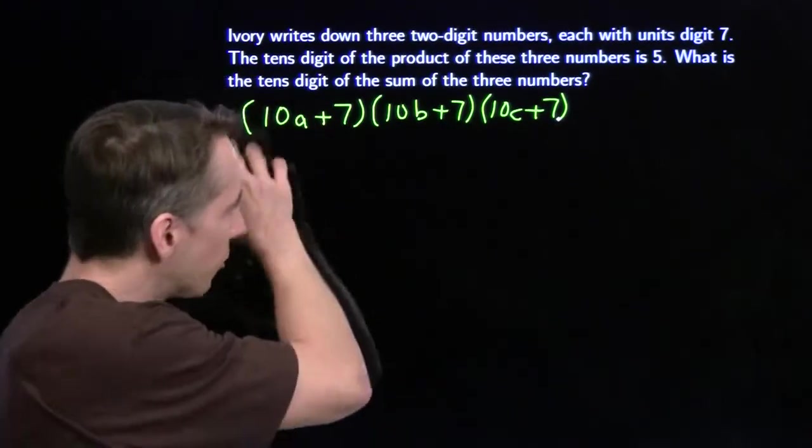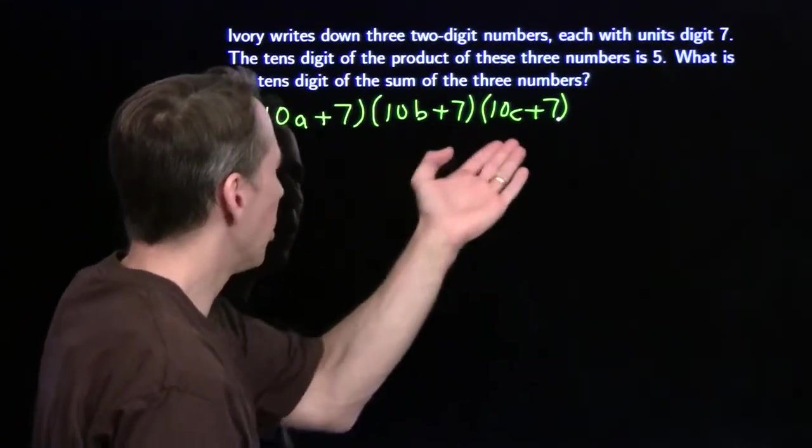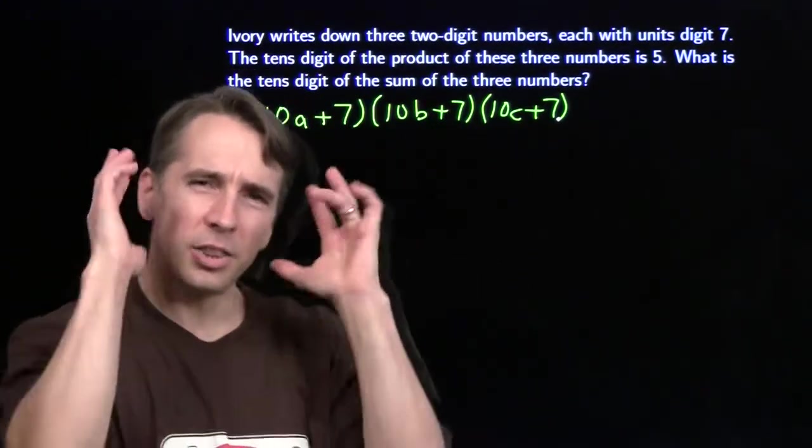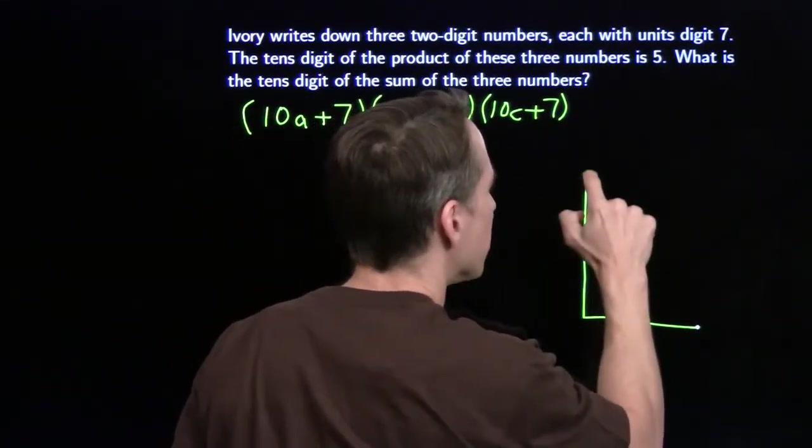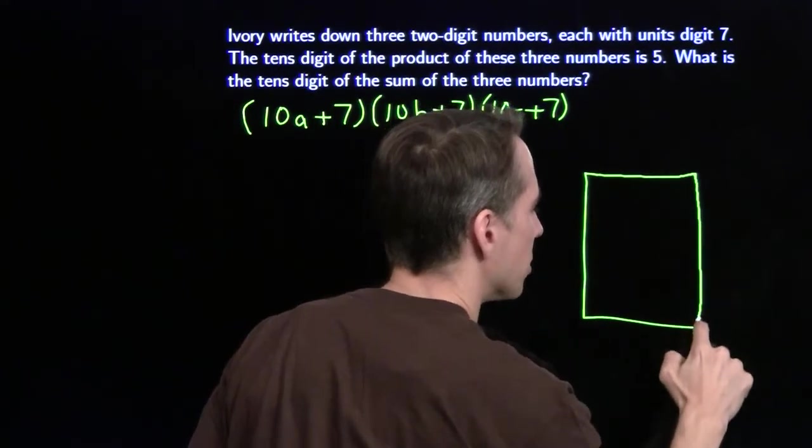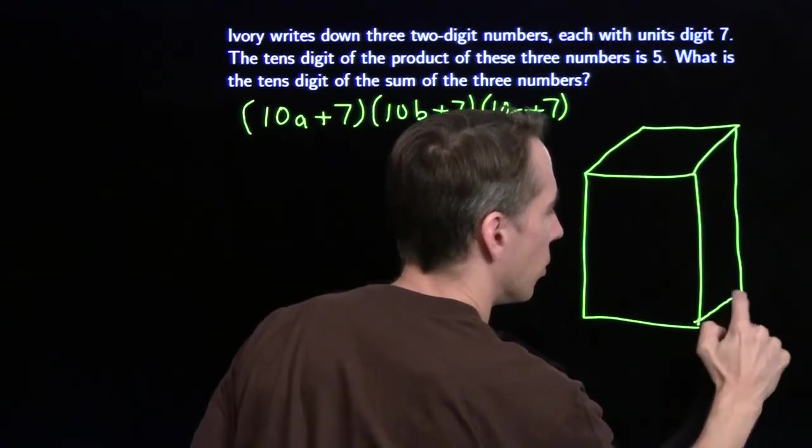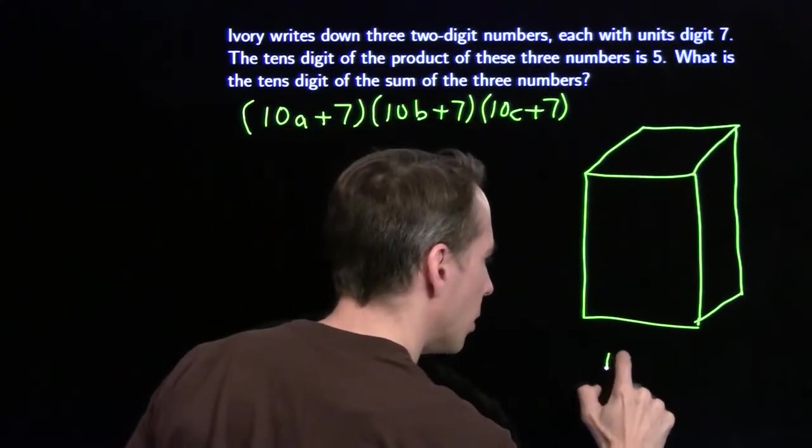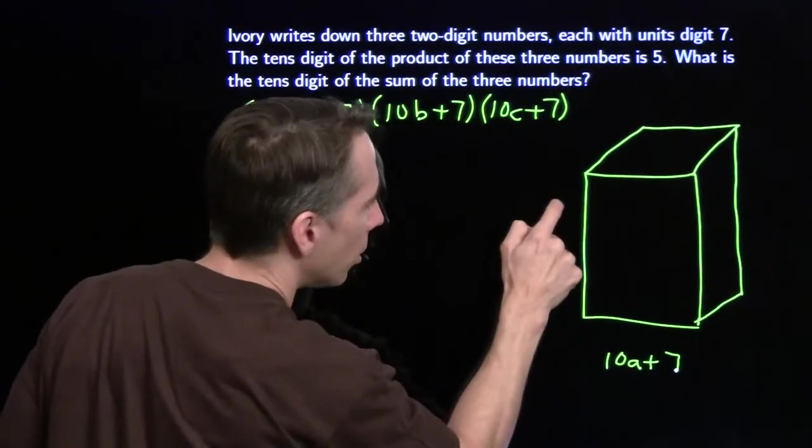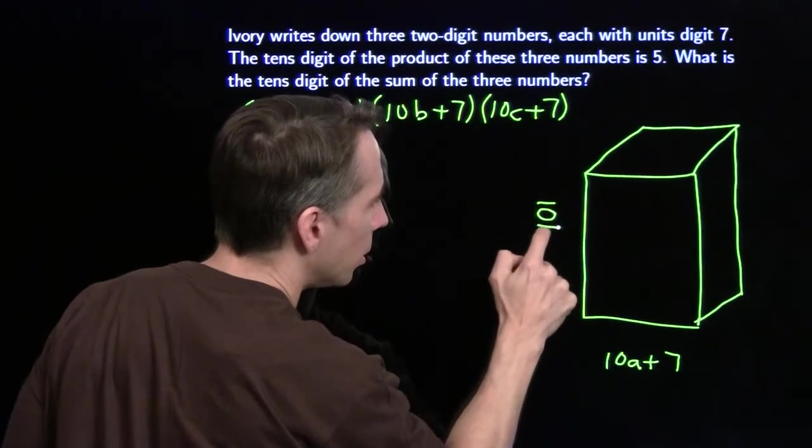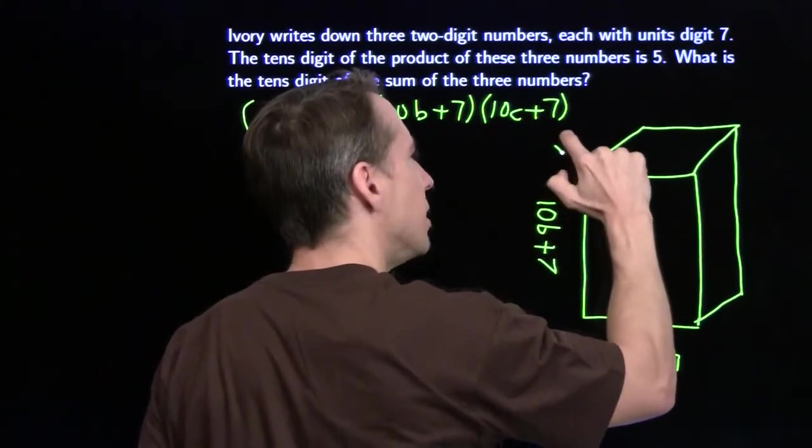Now, we could break out the distributive property, multiply, multiply, multiply, but I like to visualize what's going on here. I'm multiplying three expressions there. I can think of this as finding the volume of a rectangular prism with these three numbers as the dimensions. So there's my rectangular prism, and I'll say this dimension there is 10a plus seven. This dimension going up and down, we're going to call that 10b plus seven. And this dimension going that way, we're going to call that 10c plus seven.